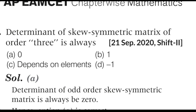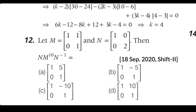For orders 3, 5, 7 — these are odd numbers — the determinant of the skew matrix is always 0. So the value is 0. The answer is A.